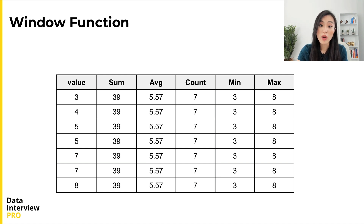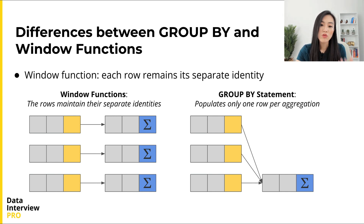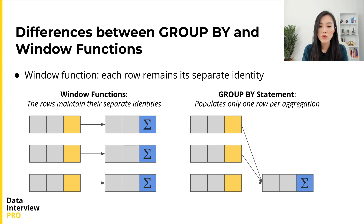For example, we can use some window functions to get a few summary statistics of a column called 'value'. Here we only have one group, and we can obtain the sum, average, count of rows, etc. of this group. To understand window functions, it's helpful to compare them with a GROUP BY statement. We can use GROUP BY to group rows that have the same values into one group and obtain summary statistics. The GROUP BY statement returns one row per group, but unlike GROUP BY, using a window function does not cause rows to be grouped into a single output row.